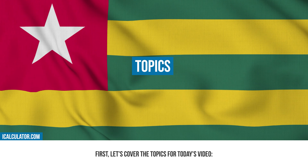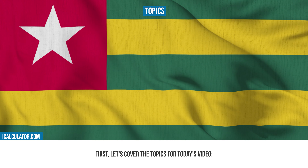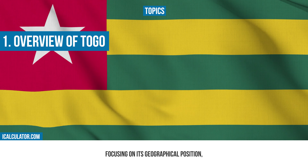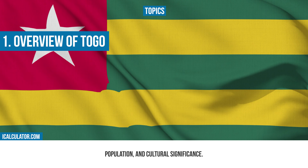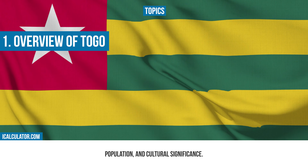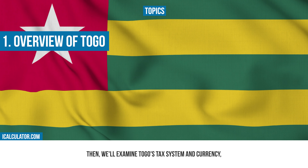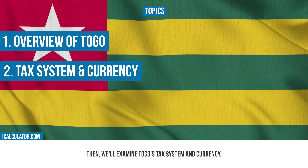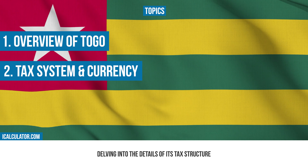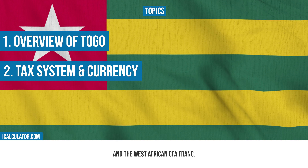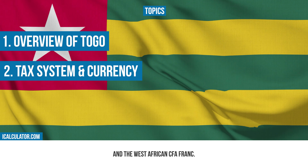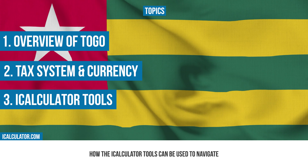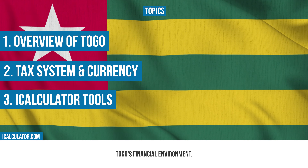First, let's cover the topics for today's video. We'll begin with an overview of Togo, focusing on its geographical position, population and cultural significance. Then we'll examine Togo's tax system and currency, delving into the details of its tax structure and the West African CFA franc. Finally, we'll highlight how the iCalculator tools can be used to navigate Togo's financial environment.